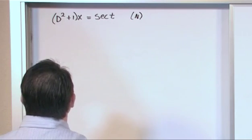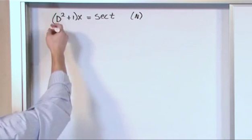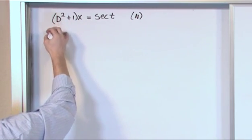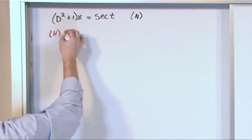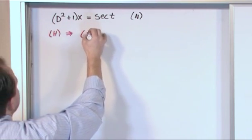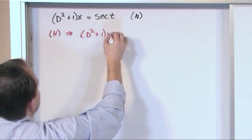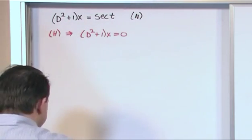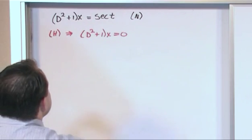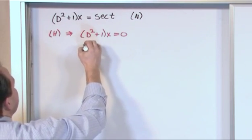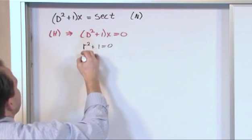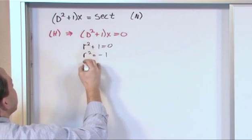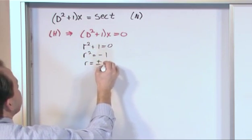And the next thing we need to do is solve the related homogeneous version. So the homogeneous version would be d squared plus 1 operating on x is equal to 0. We just take the right hand side and throw it away. Now we know how to solve these guys, it's very simple actually. So what we'll have is r squared plus 1 is equal to 0. r squared is equal to negative 1. r is equal to plus or minus i.